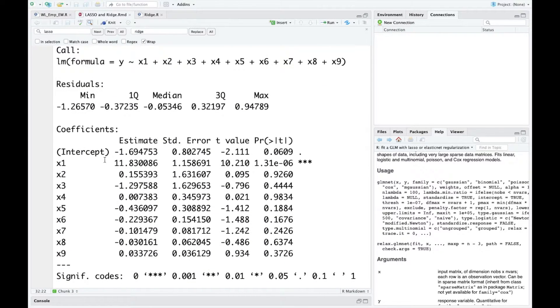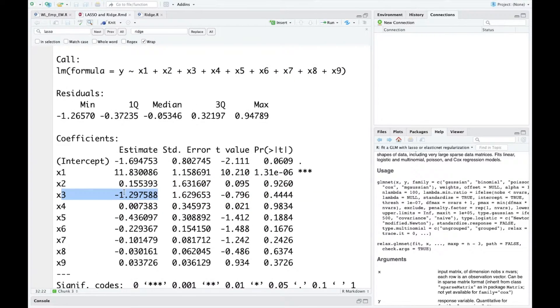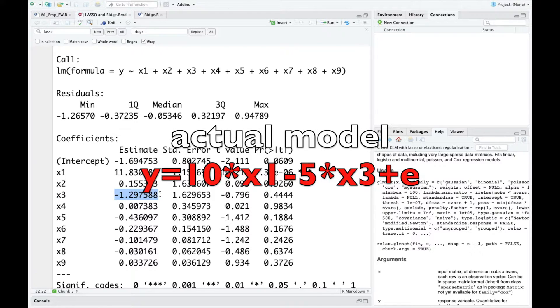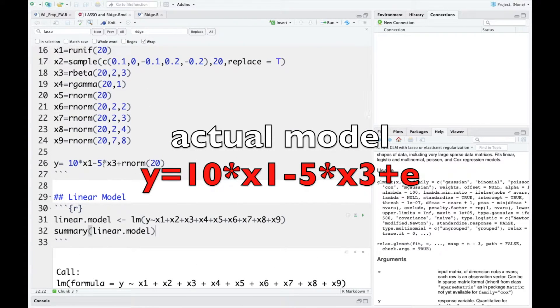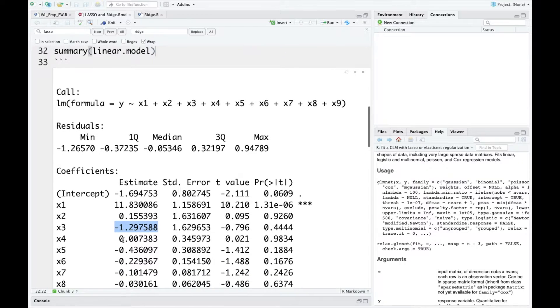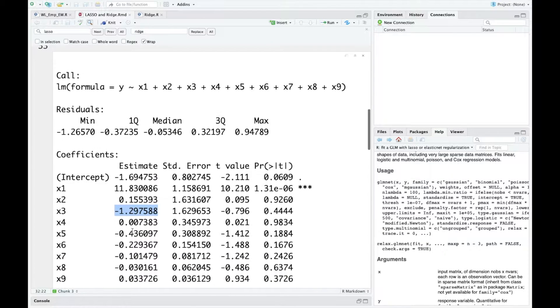Here are the results. As you can see, for x3, the coefficient is not very close to the reality. In the actual model, it's negative 5, right? But what we have here is negative 1.29. And also, you have a bunch of coefficients for the other variables which are not included in this model.